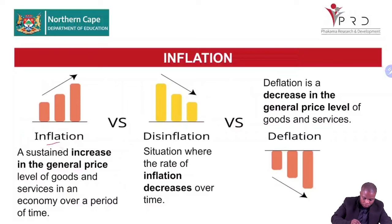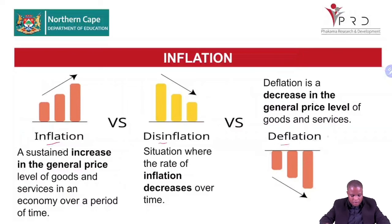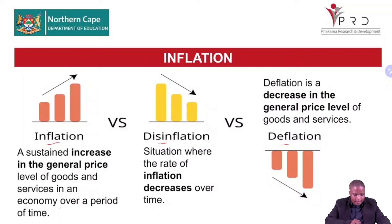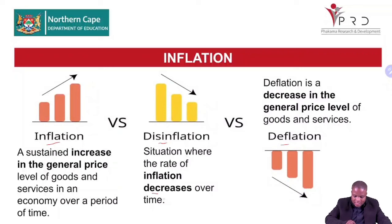There are three different terms: inflation, disinflation, and deflation. Inflation is a sustained increase in the general price level of goods and services over a period of time — for example, the price of bread has increased drastically from 1991 to 2024. Disinflation is a situation where the rate of inflation decreases over time.